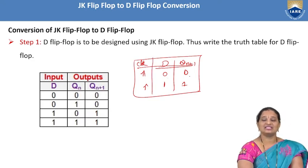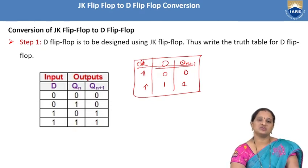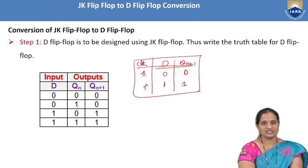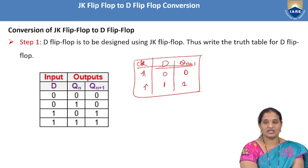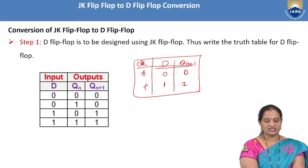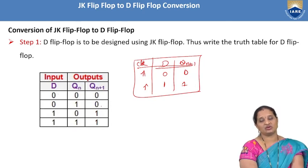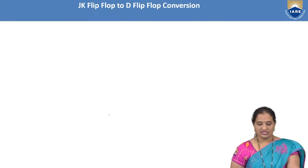The D flip-flop truth table: when D=0 and QN=0, QN+1=0; when D=0 and QN=1, QN+1=0; when D=1 and QN=0, QN+1=1; when D=1 and QN=1, QN+1=1. Regardless of the present state, the next state equals the data input. That is why it is called a data flip-flop.